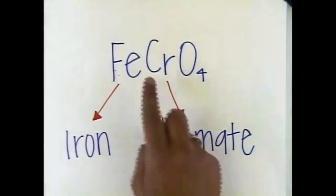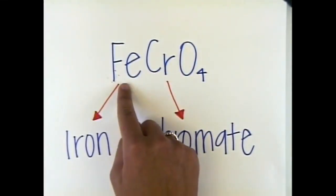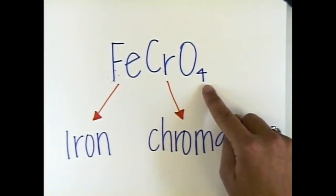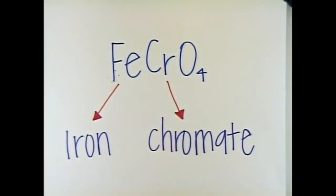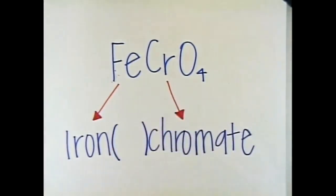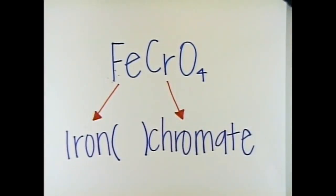In the formula FeCrO₄, Fe is the symbol for iron. Using a charge chart, CrO₄ is the polyatomic chromate ion. Iron can form an ion with a charge of +2 or +3, so we need Roman numerals. The net charge must be zero. Chromate (CrO₄) has a charge of -2. Since there is only one iron ion in the formula, its charge must be +2. The name is iron(II) chromate.